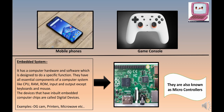Now we have a subtopic under microcomputers: embedded systems. Devices that have inbuilt embedded computer chips are called digital devices. This is actually the chip — inside this chip are all the components that exist inside a digital device. Let us start with the definition: an embedded system has computer hardware and software designed to perform a specific function.